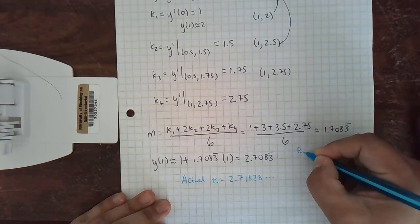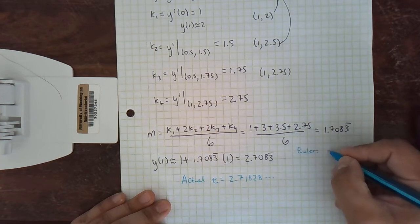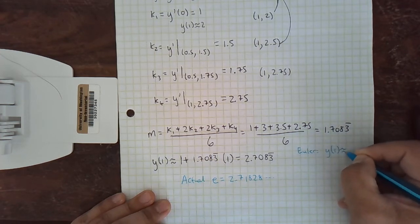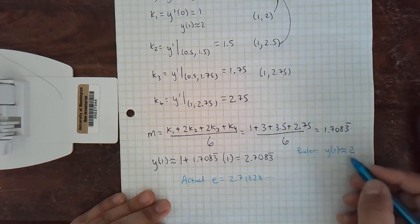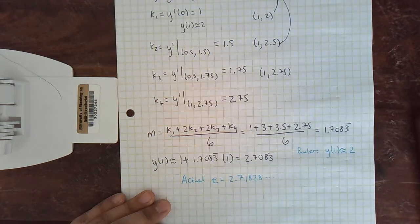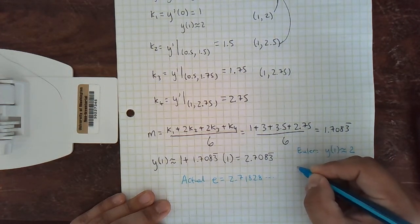Remember, we went from our original Euler method. y(1) was approximately 2. That was really far. That was 0.7 off for a value of 2. That's not very good.